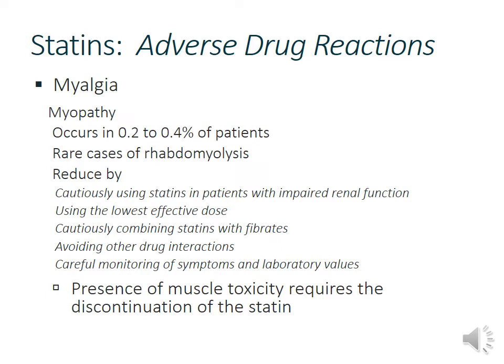Myalgias and myopathies occur in about 0.2% to 0.4% of patients and are also dose-dependent. The most serious concern is rhabdomyolysis — significant muscle breakdown. The mechanism isn't fully understood, but especially with renal impairment, myoglobin released from muscles can precipitate in the kidneys leading to renal failure. Patients should be told: some muscle pain is okay, but if they feel like they've been lifting weights all day without exercising, or can't walk, those are warning signs. Brown or tea-colored urine is another serious warning sign of muscle breakdown — stop therapy immediately and get checked.